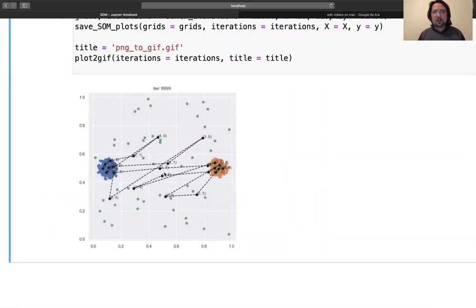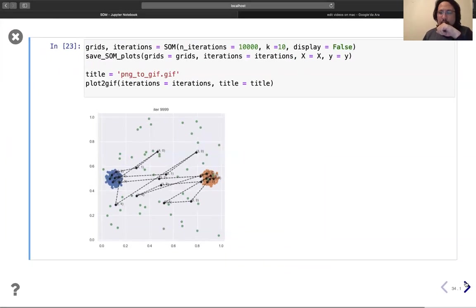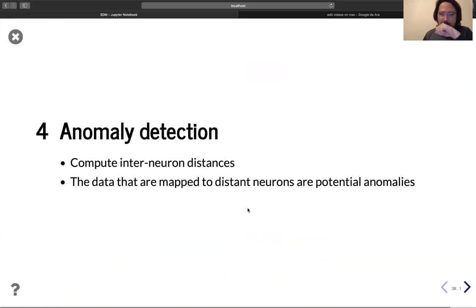Okay, so now what we can do? Now I want to talk about another application, which is anomaly detection that you can use for self-organizing map. So we need to compute inter-neuron distances.